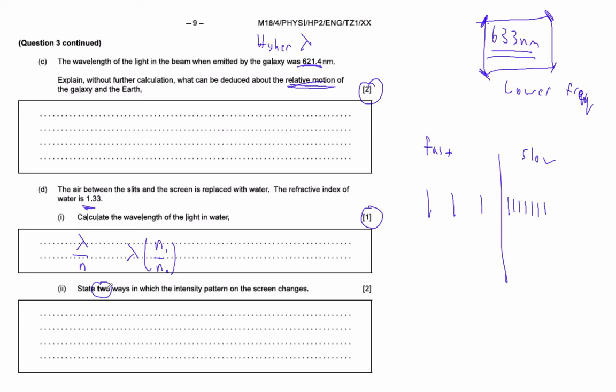State two ways in which the intensity pattern on the screen changes. So this is just like the diffraction lab. As lambda decreases, what does that do? What does that do to the separation? Now remember, the separation on the screen is lambda d over d. So if this gets smaller, what happens to this? That's the first thing.